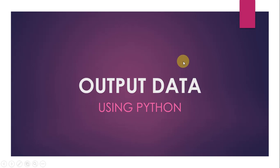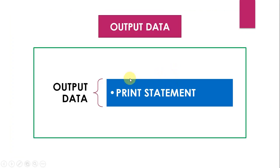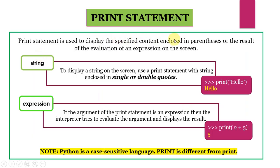Greetings dear learners. In this video we will talk about how to output data using Python. We can output or display data on the screen in Python using the print statement. The print statement is used to display the specified content enclosed in parenthesis, or the result of the evaluation of an expression, on the screen.